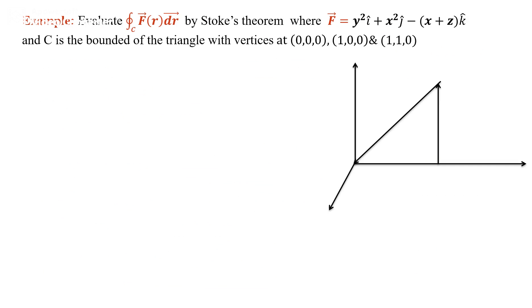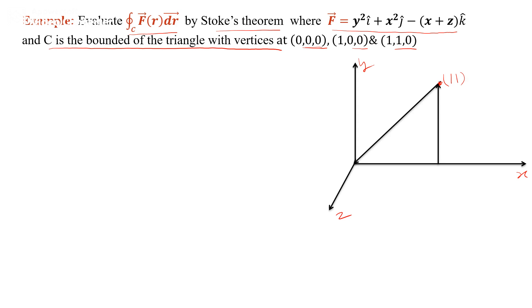Now evaluate the line integral F·dr by Stokes' theorem, where F = y²·i + x²·j − (x+z)·k, and C is bounded by a triangle with vertices (0,0,0), (1,0,0), and (1,1,0). Looking at the boundary region in the xy-plane, the coordinates are (0,0), (1,0), and (1,1), and the equation of the line is y = x.